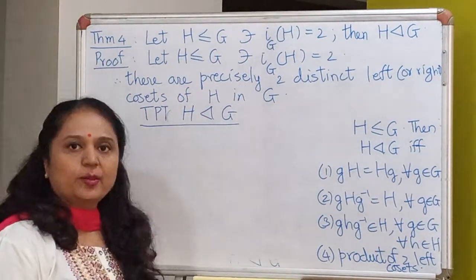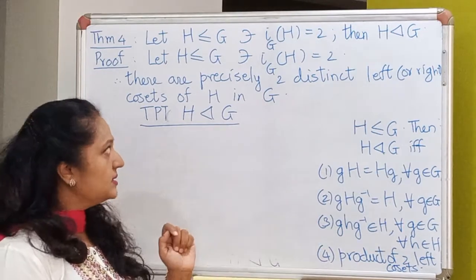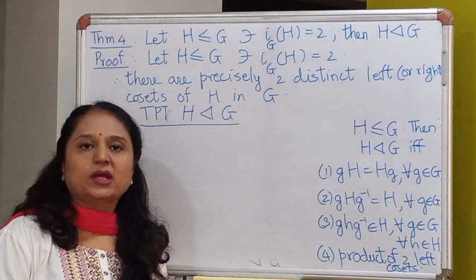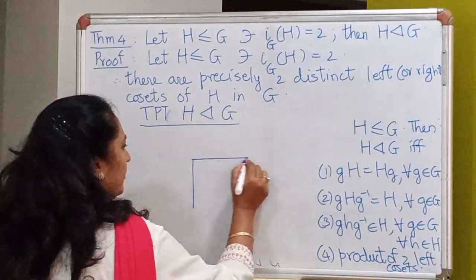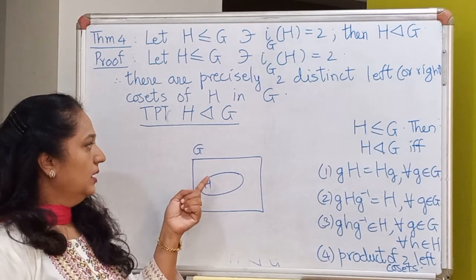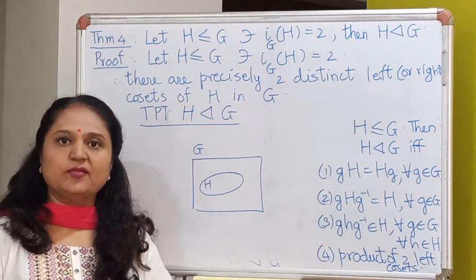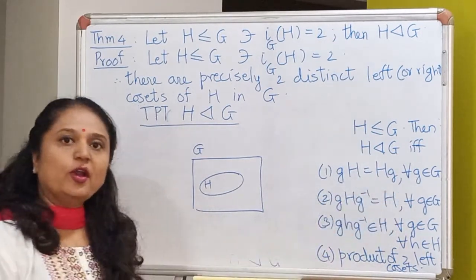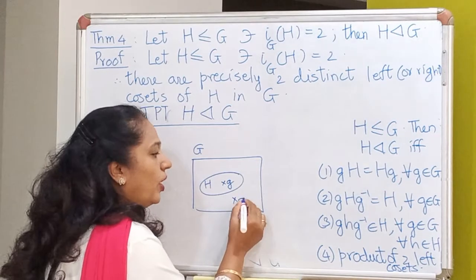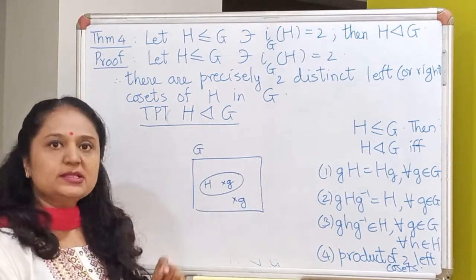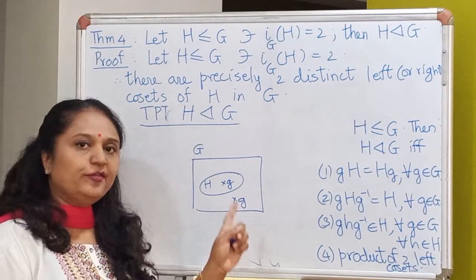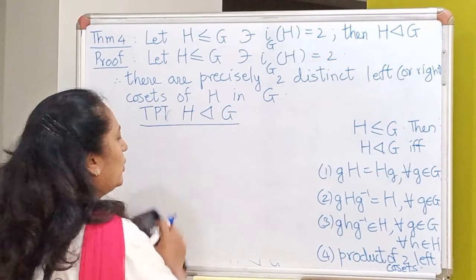We wish to prove that H is a normal subgroup of G. I will prove that every left coset of H in G has to be equal to the corresponding right coset — that is, gH equals Hg for all elements g in the group G. The element g may either lie inside the subgroup or outside it, and I will prove that in both cases the left coset is the same as the right coset. Let's look at the easy case first.